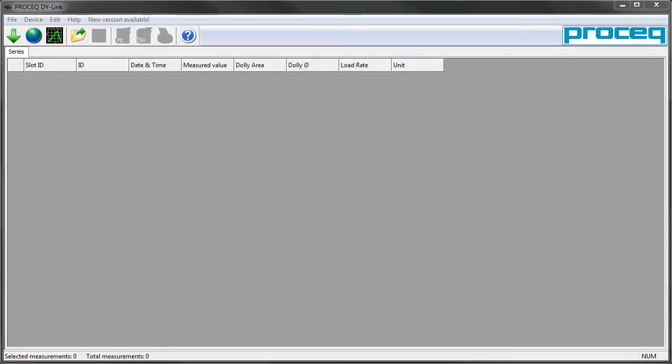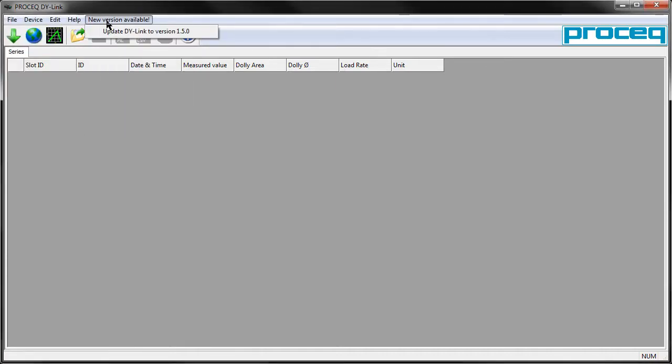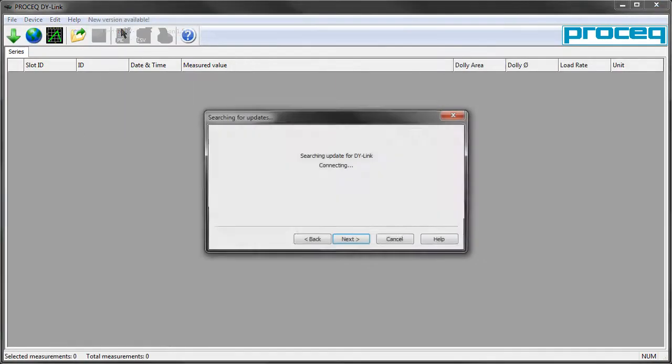Di-Link software can be used to review data collected with the Di2. It can also offer a live view of the force being applied by the Di2 and it's also used to update the Di2 to a newer firmware version. When you install it fresh from the CD it's going to be a slightly older version so it's good to immediately update Di-Link to the latest version.